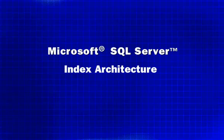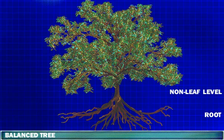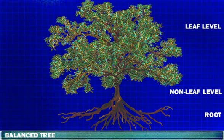Microsoft SQL Server Index Architecture. SQL Server indexes are implemented as a type of balanced tree, or B-tree structure. Similar in concept to a tree, the B-tree diagram consists of a root, non-leaf level, and leaf level. However, in B-tree diagrams, the tree analogy is inverted.